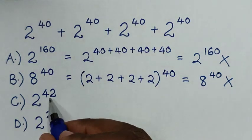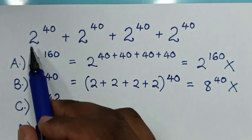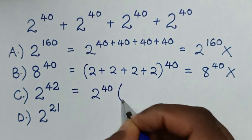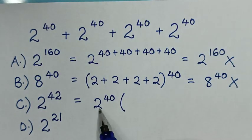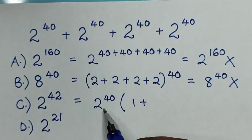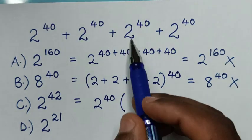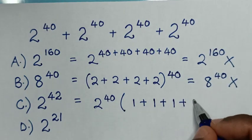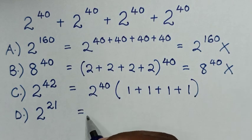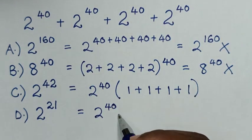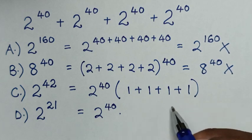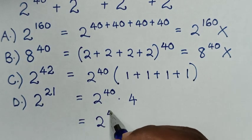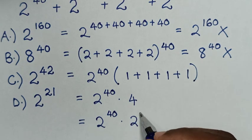Then to check in C, 2 power of 40. In here, 2 power of 40 is common, so we take 2 power of 40 out of the bracket. Then 2 power of 40 divided by 2 power of 40 is 1, plus 1, plus 1, plus 1. So it equals 2 power of 40 times 1 plus 1 plus 1 plus 1, which is 4. And 4 is the same as 2 power of 2.